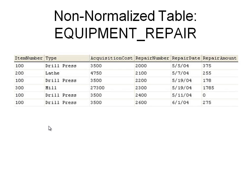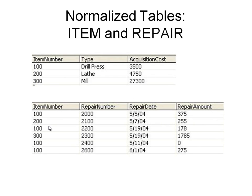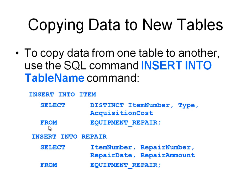Here is an example of non-normalized data that can be normalized and split into two tables. The first table will be item and the second table will be repair. The item number will be the foreign key connecting the two tables. The two tables have been created but the data was not yet copied. To copy the data from the original table, we use INSERT INTO, getting the data from the original equipment repair table and inserting it into the columns of the item table and the repair table.